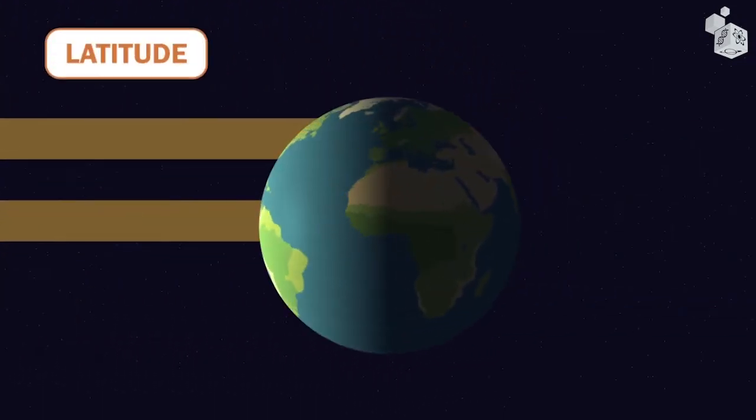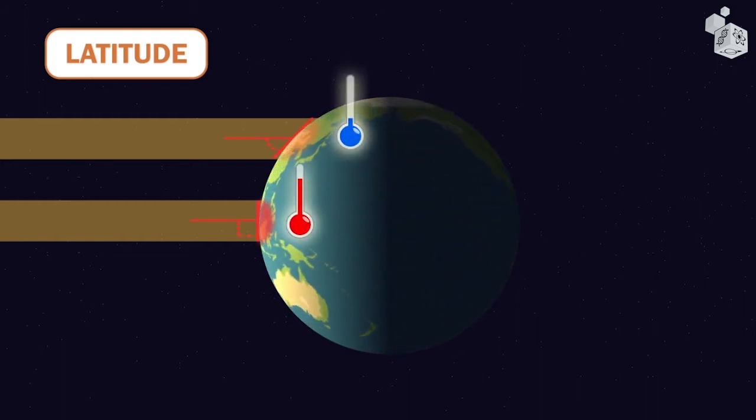The lower the latitude of a region, the greater the angle of the sun's rays as they fall and the higher the temperatures.